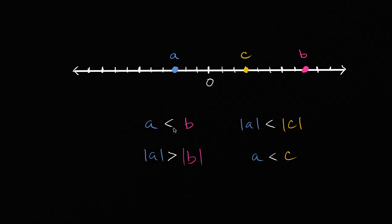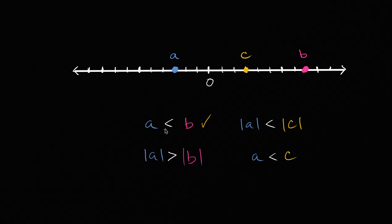Let's look at this first one. It says that A is less than B. If we look at A and we look at B, A is clearly to the left of B on the number line, so we know that this is true. A is negative — it's to the left of zero — while B is positive. But even simpler: A is to the left of B on the number line, which means A is less than B, because the number line increases from left to right.